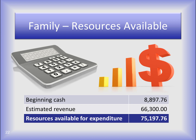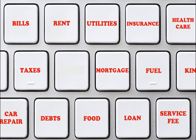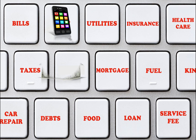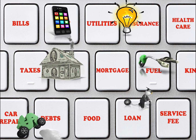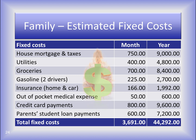Let's see how they plan to spend this money. The family lists their expenses that are fixed — normal bills that must be paid each month or throughout the year. For example: cell phones, household mortgages and taxes, fuel, car repairs, utilities, student loans, and food. These bills must be paid. The family multiplies the fixed costs to the annual amount and adds them together. They burn through quite a bit of their resources on fixed costs.